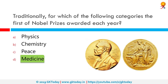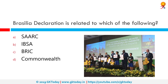The Brasilia Declaration is related to which of the following? Correct answer is IPSA. The IPSA Dialogue Forum is an international tripartite grouping for promoting international cooperation among countries. The Brasilia Declaration on road safety was the declaration through which IPSA agreed on ways to halve road traffic deaths by the end of this decade.